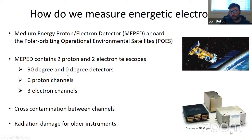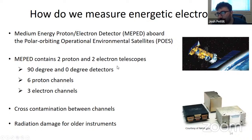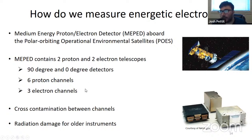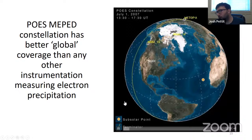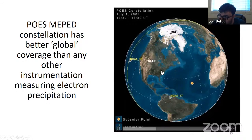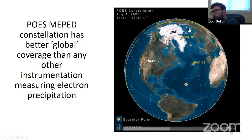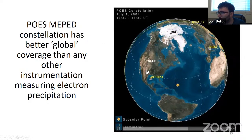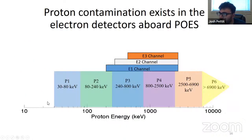This changes — the orientation of the satellite changes as it goes to the equator, where the opposite is true. There are several POES MEPED datasets, and some use both detectors and some only use the zero-degree detector. As we move forward, you'll see why that's important in terms of the ionization impacts on the atmosphere. The nice thing about POES is it has semi-global coverage, better than other instruments measuring electron precipitation. This movie shows the satellite zipping around and where they are at any given point in time.